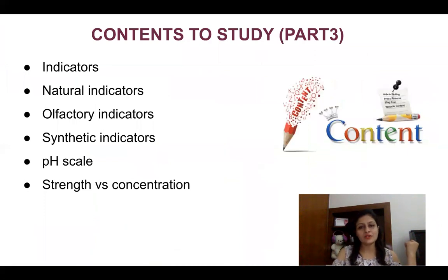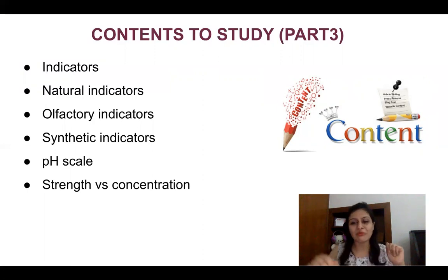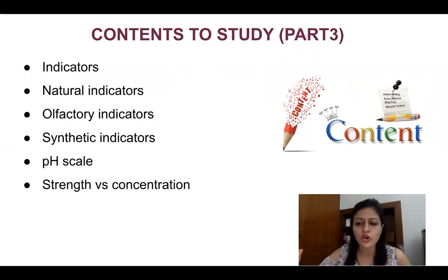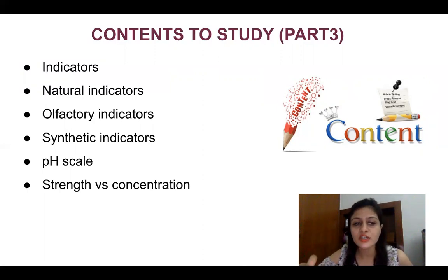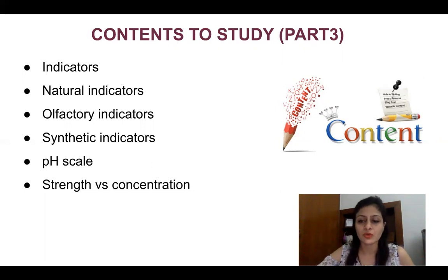Today we are going to study indicators — what are indicators and their types — then pH, which is a scale that measures acidity and basicity, what is neutral. Also one small topic not in your NCERT book but important: what is strength and what is concentration, and the difference between them, so you don't get confused while reading.